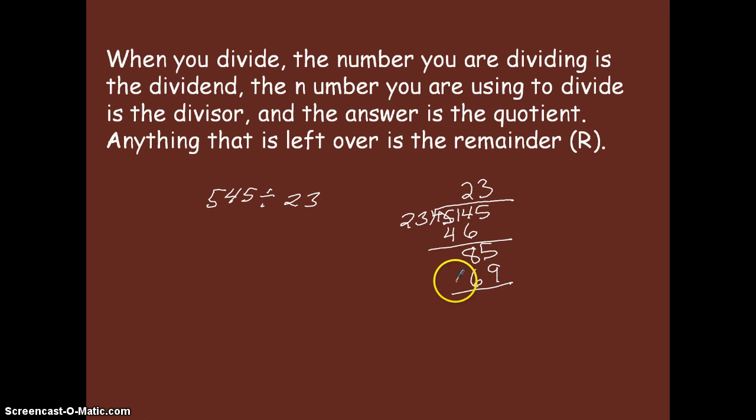Now once again I'm going to have to do a little bit of regrouping here. 15 take away 9, that's going to give me 6 and 7 tens take away 6 tens will give me 1 ten. So I now have a remainder. So 23 will go into 545 23 times with a remainder of 16.